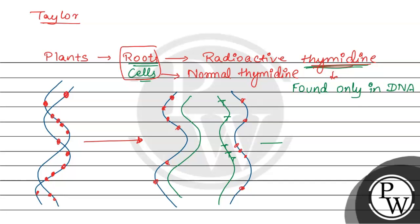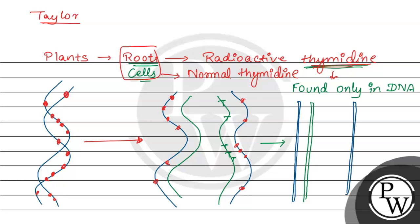तो अभी इन cells को अगर हम observe करें, क्या होगा — एक strand जो है वो radioactive strand रखेगा, और एक strand जो है वो normal strand है, without radioactive thymidine. तो यह है one daughter cell. दूसरे daughter cell में भी ऐसा ही दिखेगा — one radioactive thymidine वाला strand है, one normal strand है.